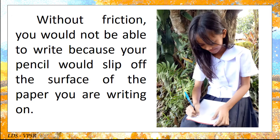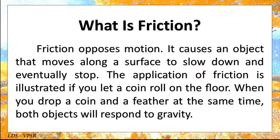Without friction, you would not be able to write because your pencil would slip off the surface of the paper you are writing on. What is friction? Friction opposes motion. It causes an object that moves along a surface to slow down and eventually stop.